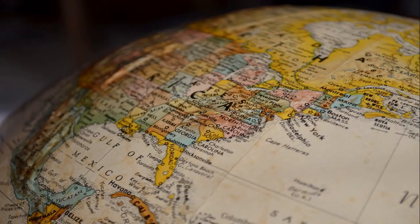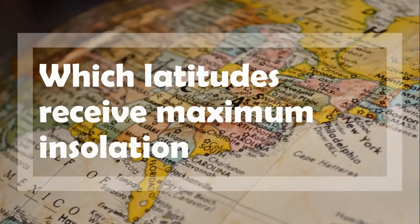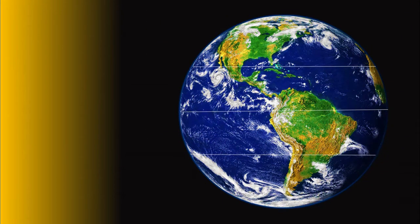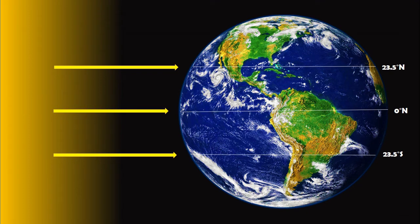Now, which latitudes receive maximum insolation? The rays that fall perpendicular to the surface, or 90 degrees above the horizon, have minimum attenuation, shortest path length, and less beam spreading. It varies only between 23.5 degrees north and 23.5 degrees south latitude. These areas receive maximum insolation.